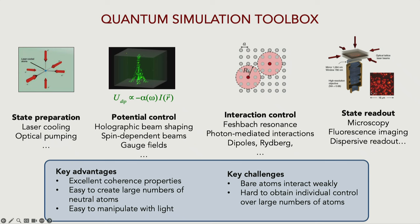There are a few challenges. One is that you have to make the atoms actually interact to have a useful quantum simulator. The second challenge, which was very difficult for our community over the last decade, is getting to the point where you have individual control over large numbers of atoms. Having large numbers — hundreds of thousands or even tens of thousands of atoms — is actually fairly easy. The difficult part is getting microscopic control over each of those atoms. That's a balance we've been learning over the last 10-15 years.